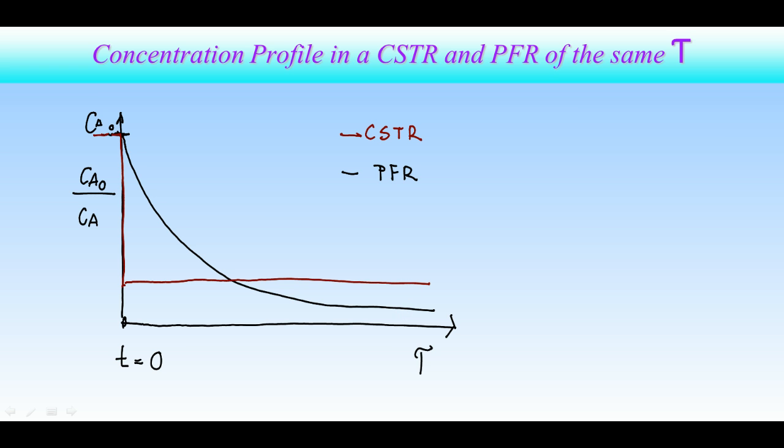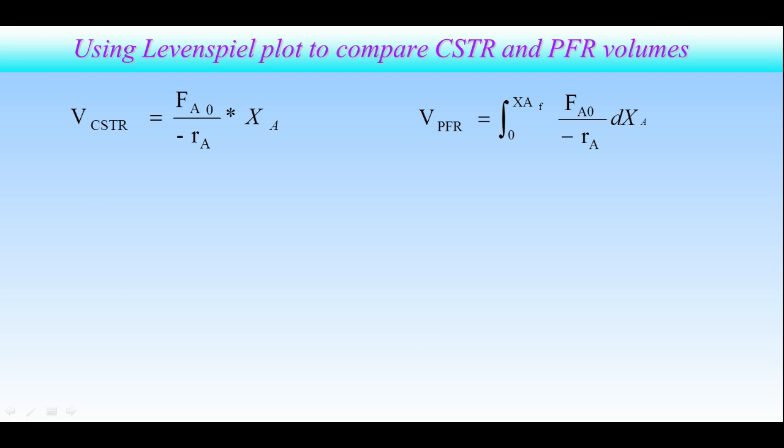Let's demonstrate this difference in the necessary volumes on the Levenspiel plot. We know by now that the reactor volume for CSTR and PFR is a function of inverse of the reaction rate. Let us recall design equations for CSTR and PFR and draw a Levenspiel plot, where both volumes are displayed.